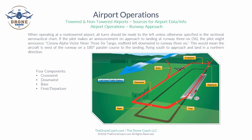The traffic pattern has four components as shown in the graph: the crosswind, the downwind, the base, and then the final leg to land, plus the departure leg.